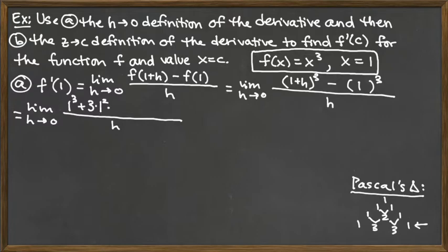We also have to throw in an h — h is the second term in the binomial 1 plus h — and that goes to the first power. The next Pascal's Triangle coefficient is 3. We multiply it by 1 to the first power, and we raise the power on the h to be the second power.